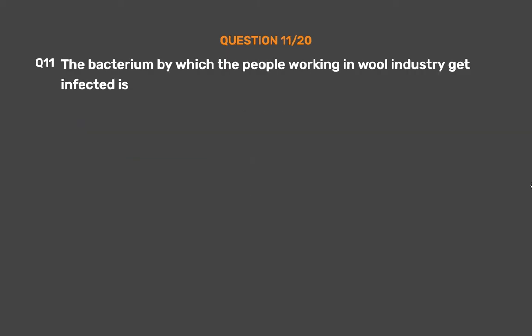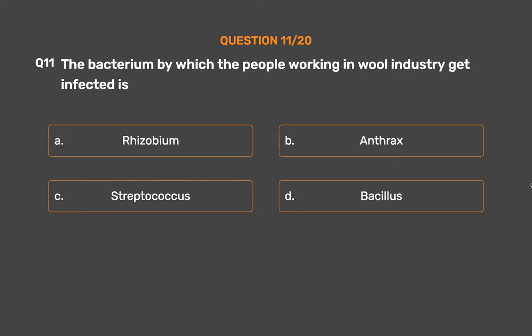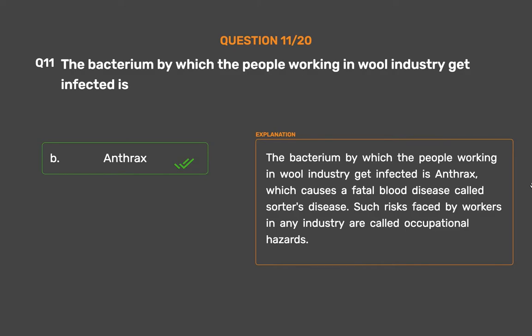Question No. 11. The bacterium by which the people working in the wool industry get infected is — Option A: Rhizobium, Option B: Anthrax, Option C: Streptococcus, Option D: Bacillus. The correct answer is Option B: Anthrax. The bacterium by which people working in the wool industry get infected is anthrax, which causes a fatal blood disease called sorter's disease. Such risks faced by workers in any industry are called occupational hazards.